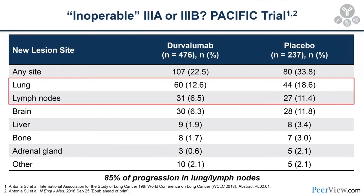Durvalumab is not the only drug moving into stage 3 disease. Pembrolizumab has also been approved for stage 3 disease based on results of KEYNOTE-042. We also heard about concurrent chemoradiation with pembrolizumab in KEYNOTE-799, reported at the recent ASCO meeting, where the overall response rate was 56 to 67 percent — a single-arm study, but very encouraging.